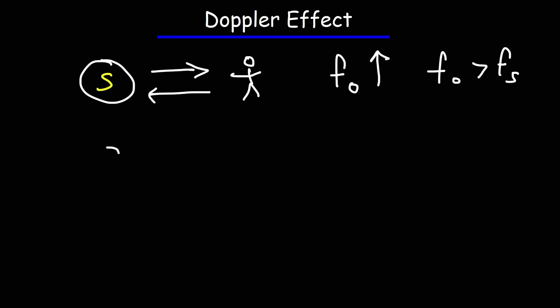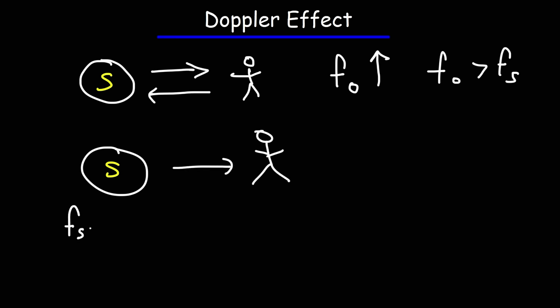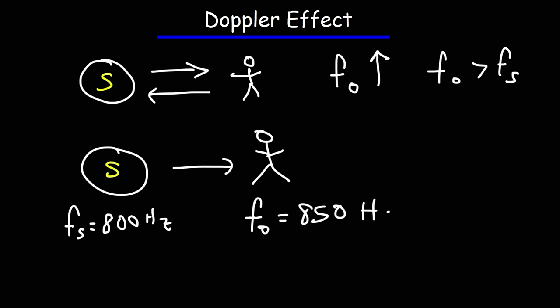Which means the frequency measured by the observer will be greater than the frequency of the source. Let me give you an example with some numbers. Let's say you have a source moving towards a person with a frequency of 800 hertz — the frequency the person hears will be higher, maybe 850 hertz. That's the basic idea: when either the source or the observer is moving, the detected frequency is going to shift — it will be different from the original frequency the source emitted.